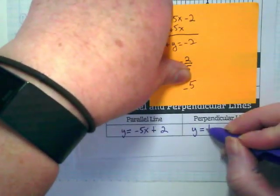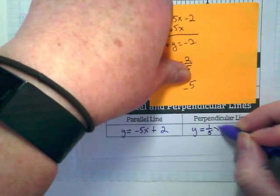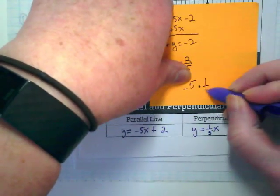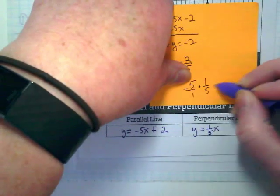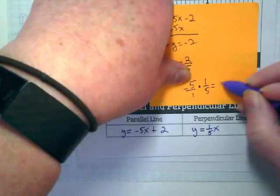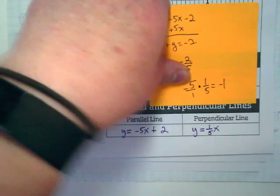So this slope is going to be 1/5x. And remember, we can test if it's opposite reciprocal by multiplying them. And if we end up with negative 1, it's opposite reciprocal.